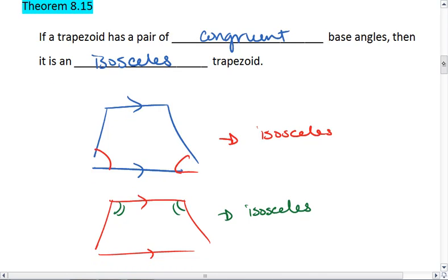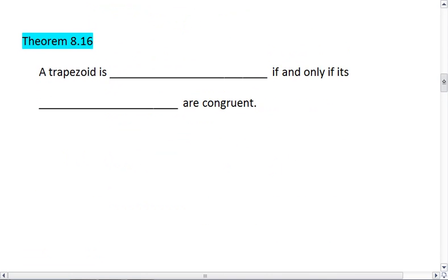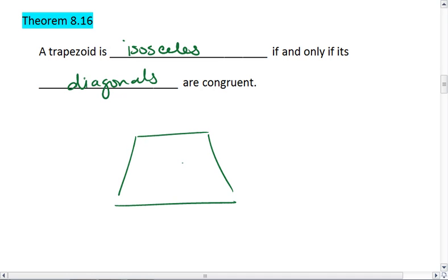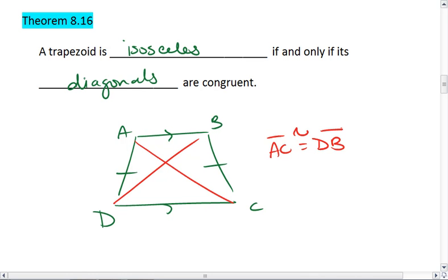And lastly, a trapezoid is isosceles if and only if its diagonals are congruent. So if we have an isosceles trapezoid, then it must be the case that its two diagonals, AC and DB are congruent. And if the diagonals are congruent, then we know it's isosceles.